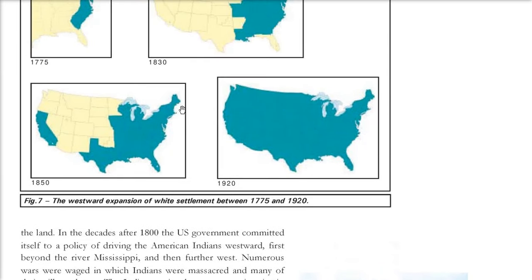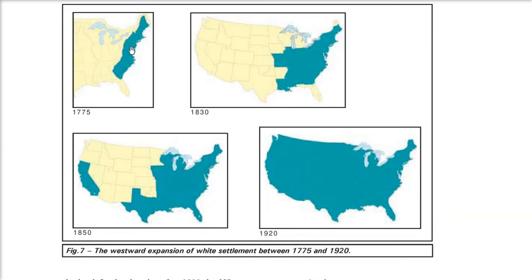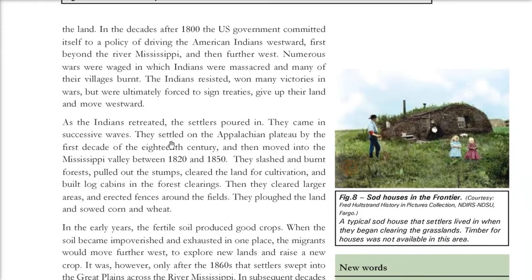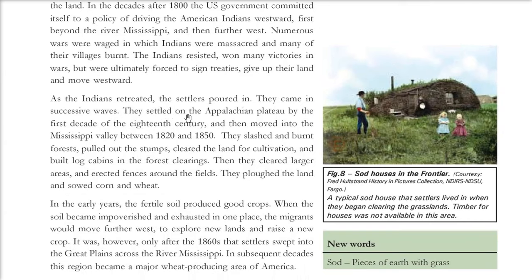If you see the expansion of the whites on the map: they used to live in a very small strip. In 1775, they expanded the area. By 1850, they expanded further. And finally, by 1920, it was all white settlement. As the Indians retreated, settlers came in and settled on the Appalachian Plateau by the first decade of the 19th century, then moved into the Mississippi Valley between 1820 and 1850.